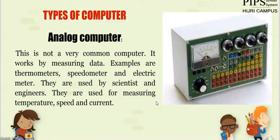Analog computers work by measuring data. Common examples are thermometers, speedometers, electric meters, and galvanometers. The most common example is the wall clock in our house, which has two hands — a smaller hand and a bigger hand — pointing to hours and minutes. This is analog because the wall clock measures time.